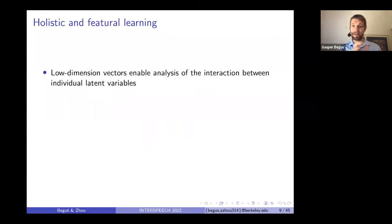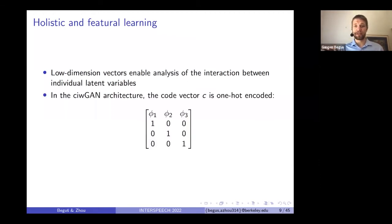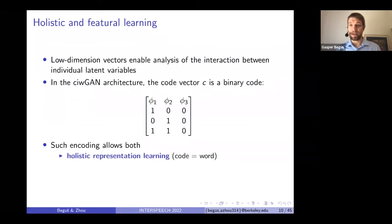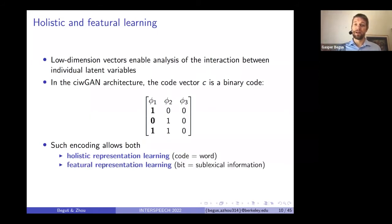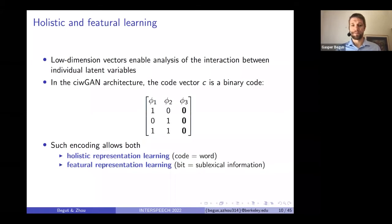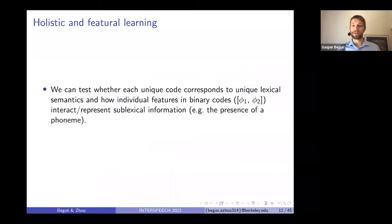These low-dimensional vectors enable analysis of the interaction between individual latent variables. In the CIWGAN architecture, the code vector is one-hot encoded. But in the FIWGAN architecture, we use binary code encoding. The binary code encoding allows us to model holistic lexical learning, where each code represents a word or lexical item, but also sublexical information, where each feature or bit can correspond to a presence of a sound or phoneme. In this paper, we test whether each unique code corresponds to unique lexical semantics, and how individual bits in the binary code represent sublexical information such as the presence of a phoneme.